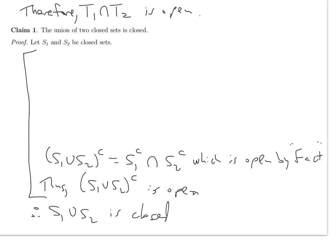This means S1 complement and S2 complement are open — that's what it means for the two sets to be closed if their complements are open. There really aren't any other lines. The complement of the union is the intersection of the complements. If these two sets are open, then the intersection is open by the fact. So now I know that (S1 union S2) complement is open, and so S1 union S2 is closed.